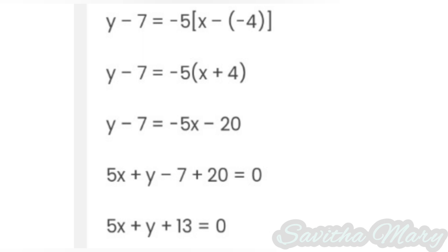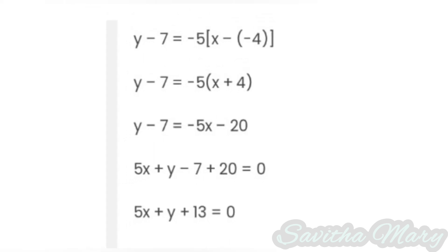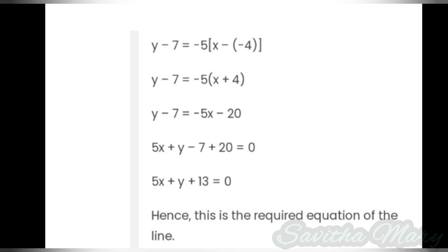Arranging the values with x, y, and constant terms on one side: the coefficient of x is 5, coefficient of y is 1, and the constant term is minus 7 plus 20, which gives 13. So 5x plus y plus 13 equal to 0 is the required line equation for the point-slope form.